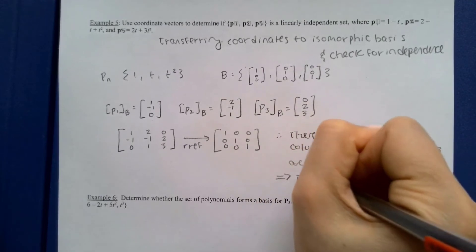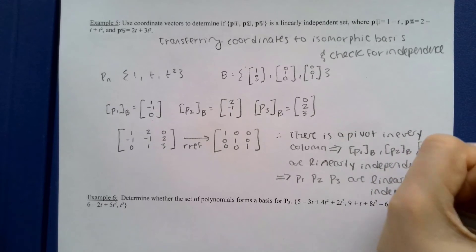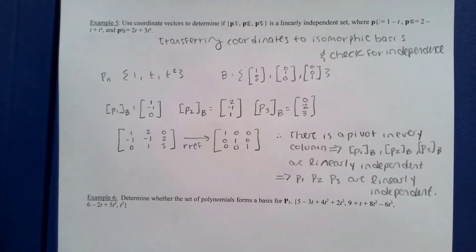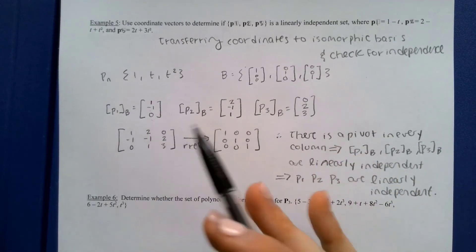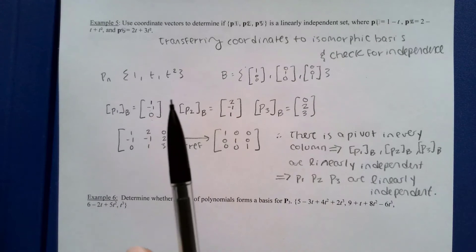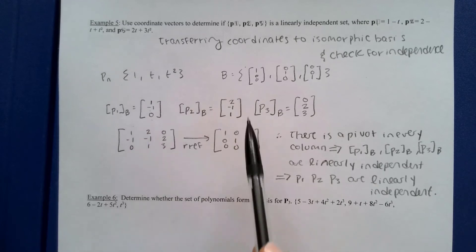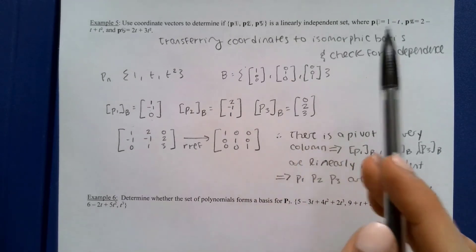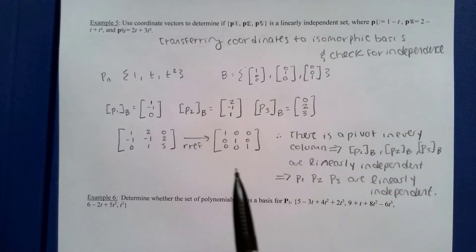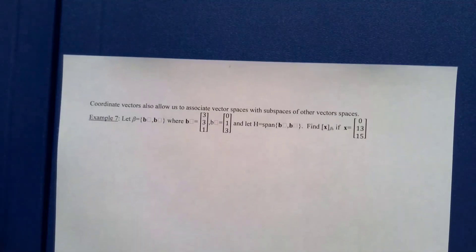Since there is a pivot in every column, [p1]_B, [p2]_B, and [p3]_B are linearly independent in R3. Therefore — because P2 is isomorphic to R3 — p1, p2, and p3 are linearly independent as polynomials. Testing linear independence with coordinate vectors means we are simultaneously testing linear independence of the original polynomials.